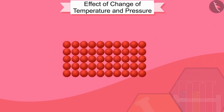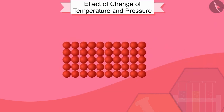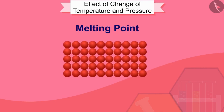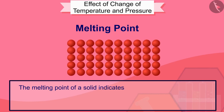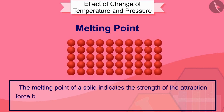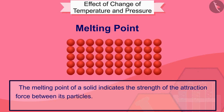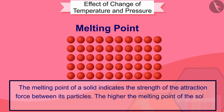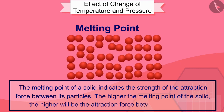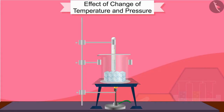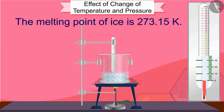The temperature at which a solid melts and becomes liquid is called its melting point. The melting point of a solid indicates the strength of the attraction force between its particles. The higher the melting point of the solid, the higher will be the attraction force between its particles. In this activity, you must have observed that the melting point of ice is 273.15 Kelvin.